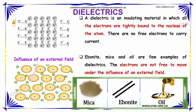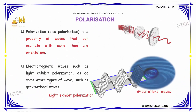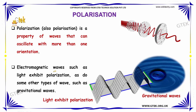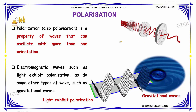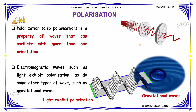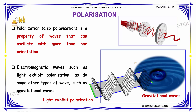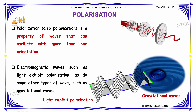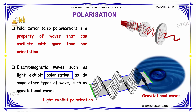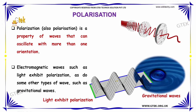The electrons are not free to move under the influence of an external field. Polarization is a property of waves that can oscillate with more than one orientation. Electromagnetic waves such as light exhibit this property of polarization, as do some other types of waves such as gravitational waves.